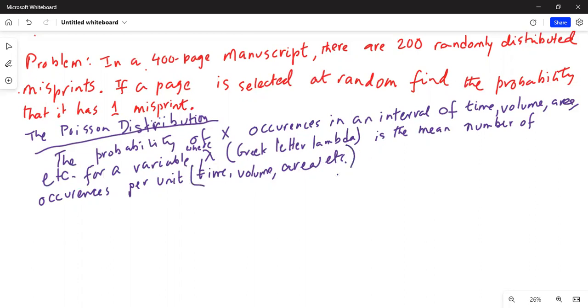Lambda is the mean number of occurrences per unit time, volume, area, etc.